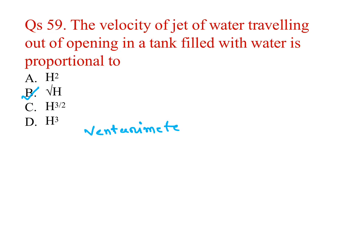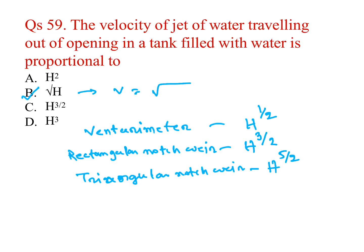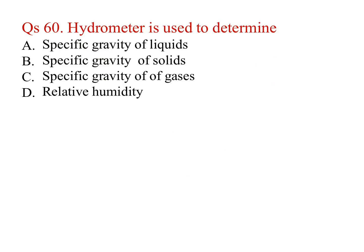For a venturimeter, flow is proportional to h^(1/2). For a rectangular notch and weir, it is proportional to h^(3/2). For a triangular notch and weir, it is proportional to h^(5/2). In our question, v = √(2gh), so v is proportional to h^(1/2).